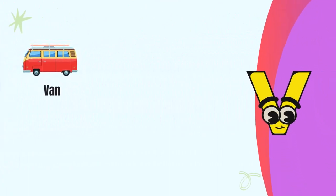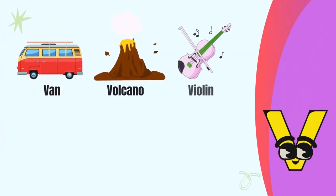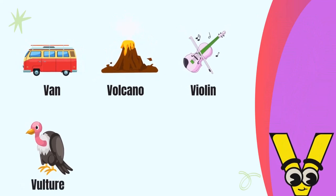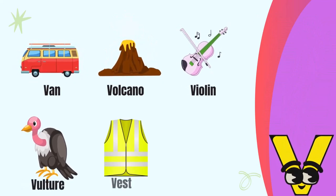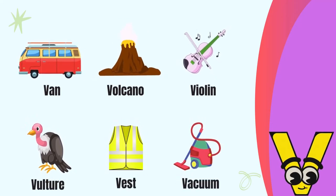Letter V. V for van, V for volcano, V for violin, V for vulture, V for vest, V for vacuum.